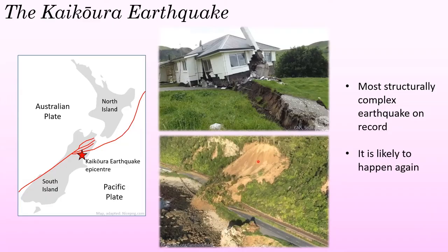The Kaikoura earthquake is therefore the most structurally complex earthquake on record, and we've yet to figure out why it was so complex. This earthquake was devastating — it killed two people and had a massive economic impact. What's worrying is that an earthquake like this is likely to happen again, because northeast South Island is at significant risk of large magnitude earthquakes, so it's really crucial we can understand why it was so complex.